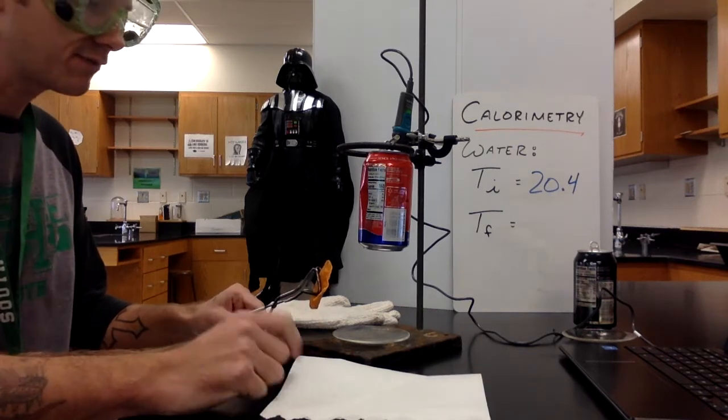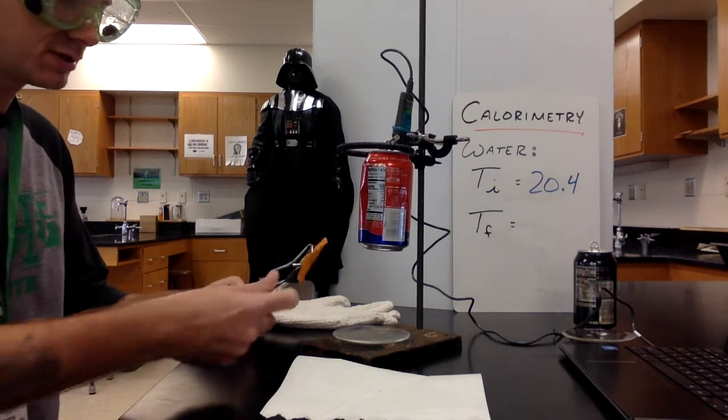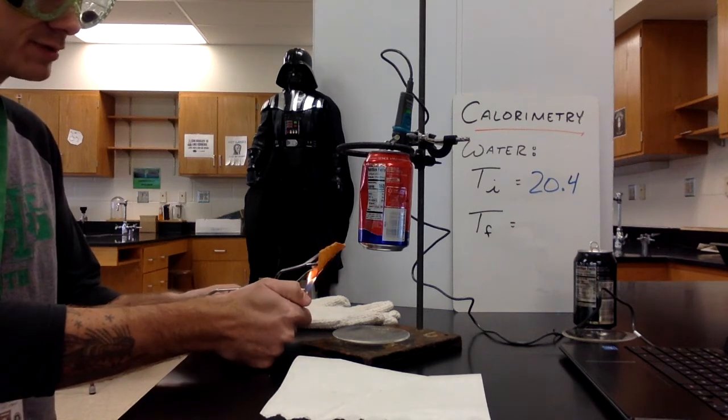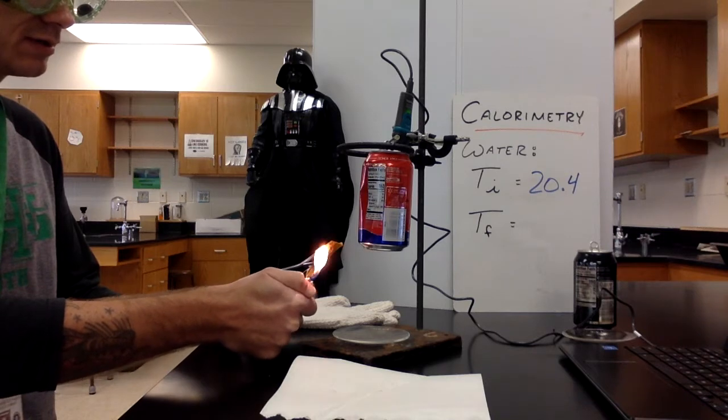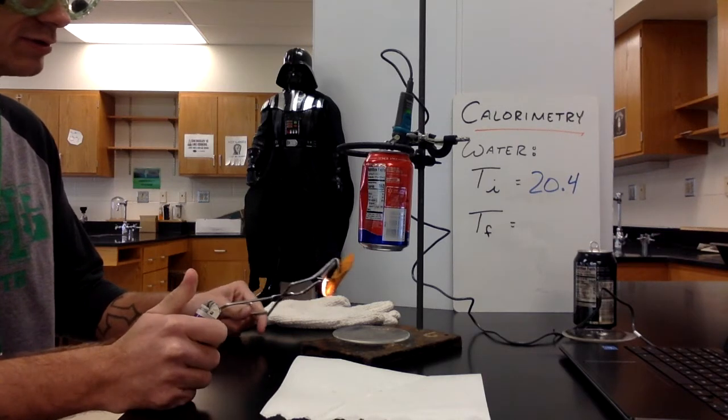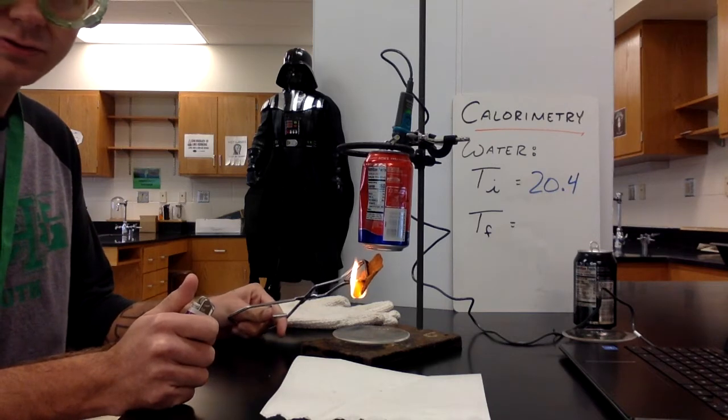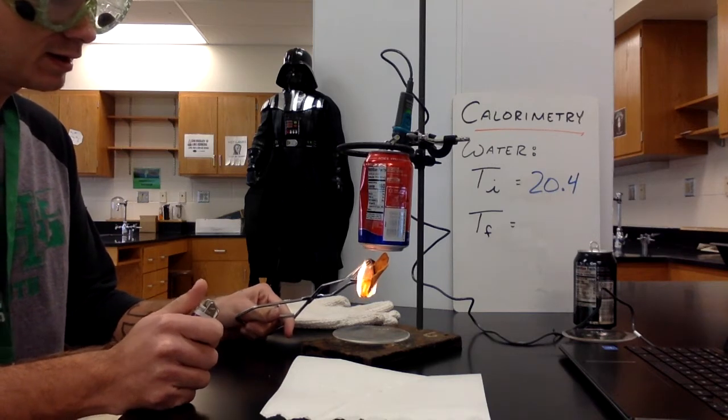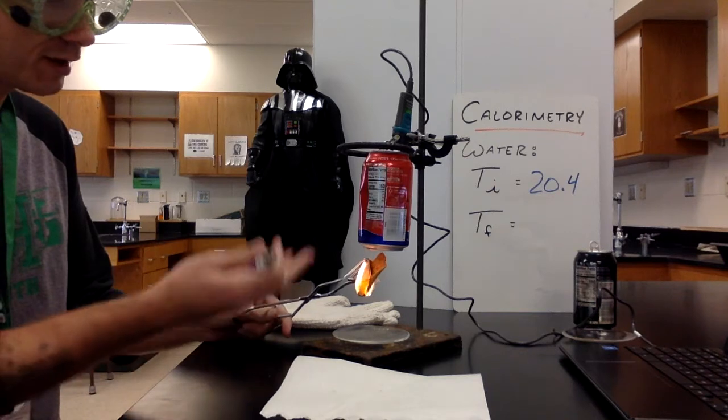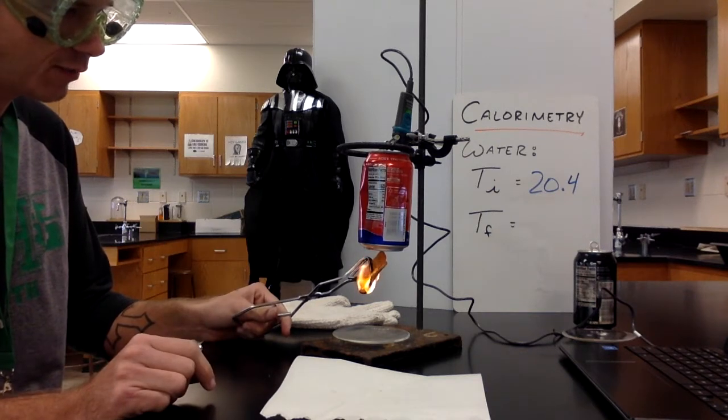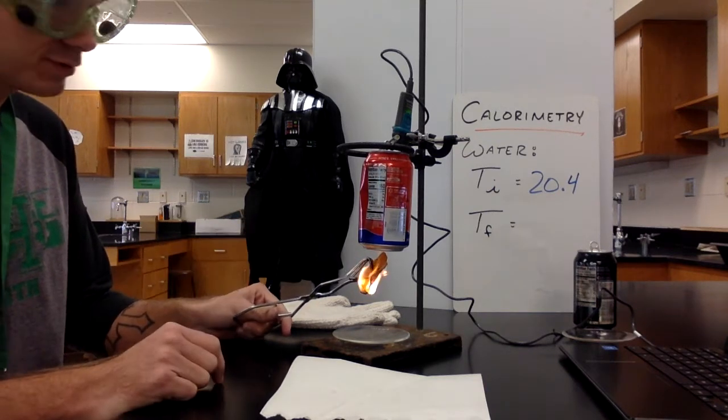I'm going to light this on fire and we're going to transfer heat energy into this calorimetry setup. I'm going to get her going here and let her cook. We'll let the heat transfer into the can. Notice how I lit the bottom and I want those flames to go up and consume the chip upwards.